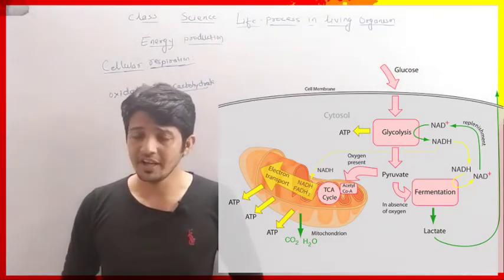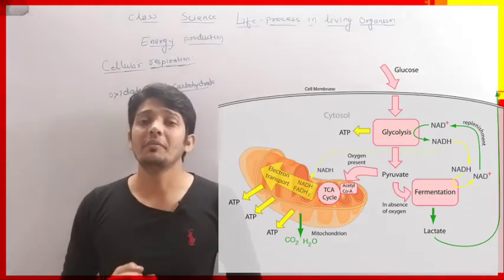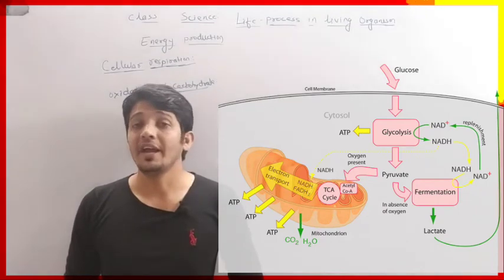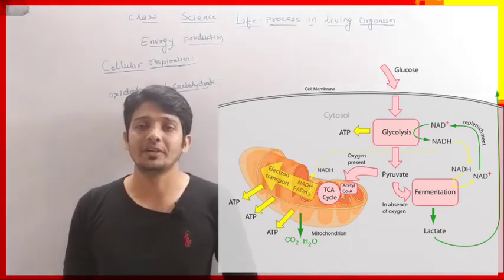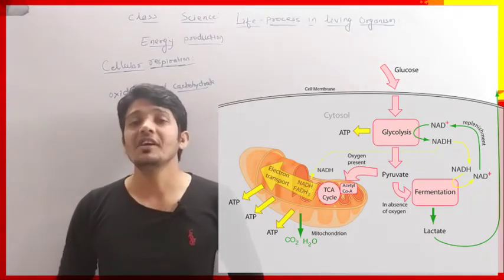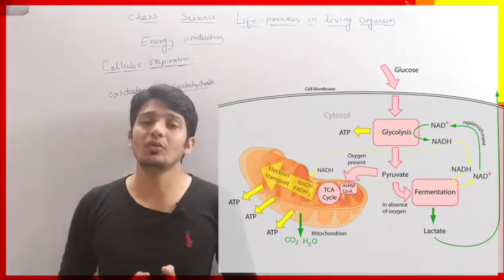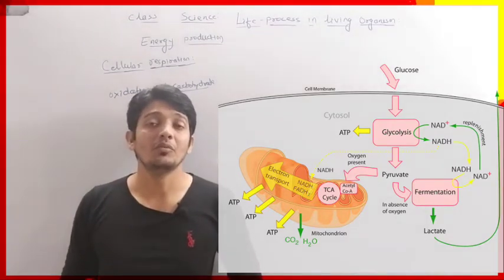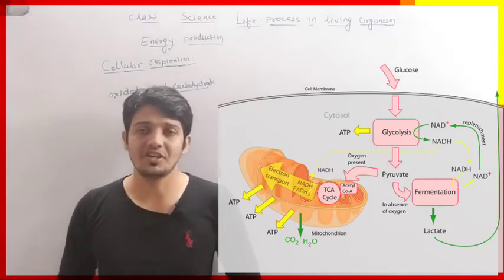During the process, a tremendous amount of energy is released in the form of ATP — adenosine triphosphate. That energy in the form of adenosine triphosphate is used by individual cells for their work and functioning.